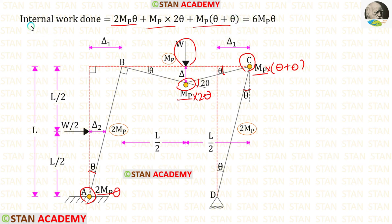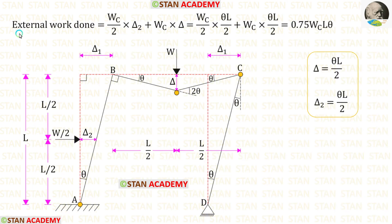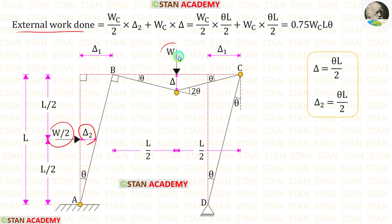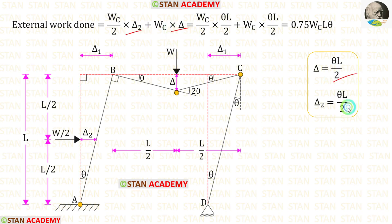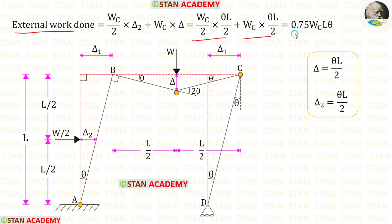Adding all terms, the internal work done equals 6MP·θ. For the external work done, we multiply load W/2 by displacement δ2 and add the product of load W with displacement δ. For both δ2 and δ we apply θL/2. After adding, the external work done equals 0.75·Wc·L·θ.